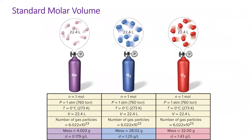The amazing thing about gases is that they all have the same volume at standard temperature and pressure. Whether it's helium, nitrogen, or oxygen, the volume of one mole at STP is 22.4 liters. The mass and the density of the gases are different, but their volume is the same.